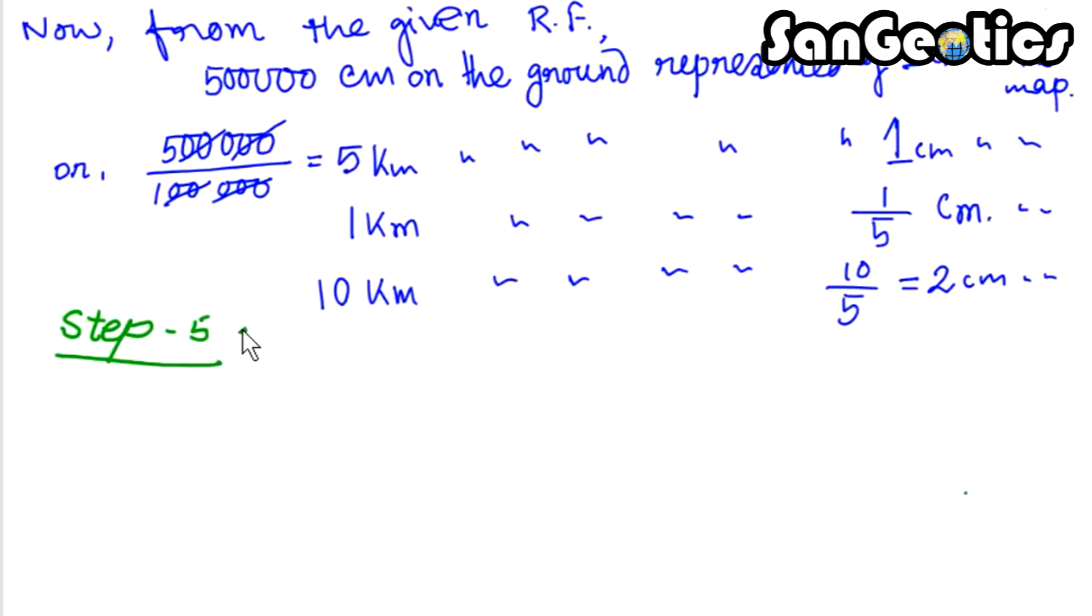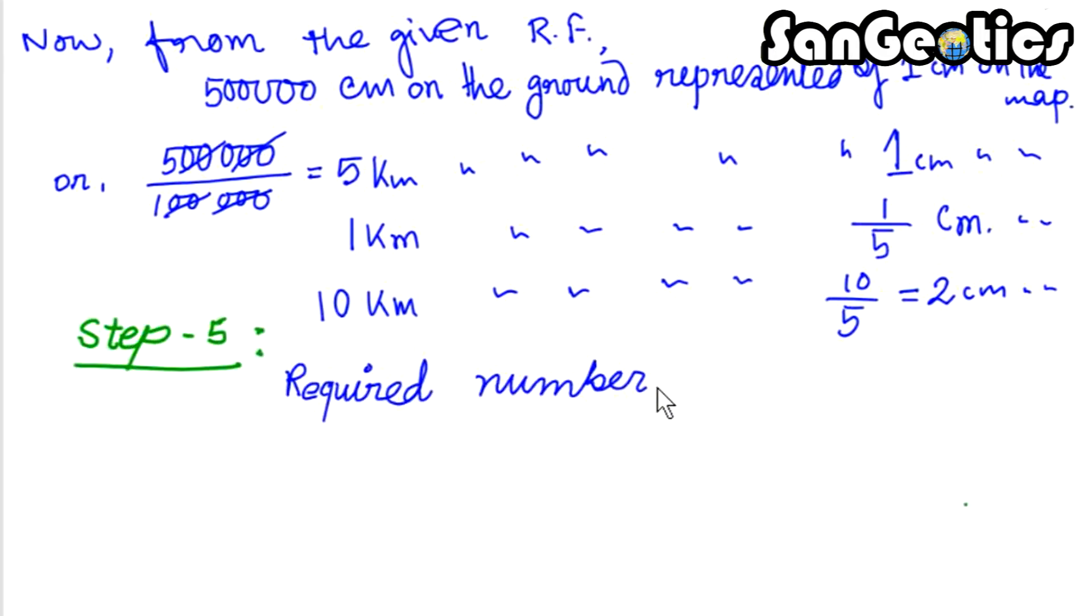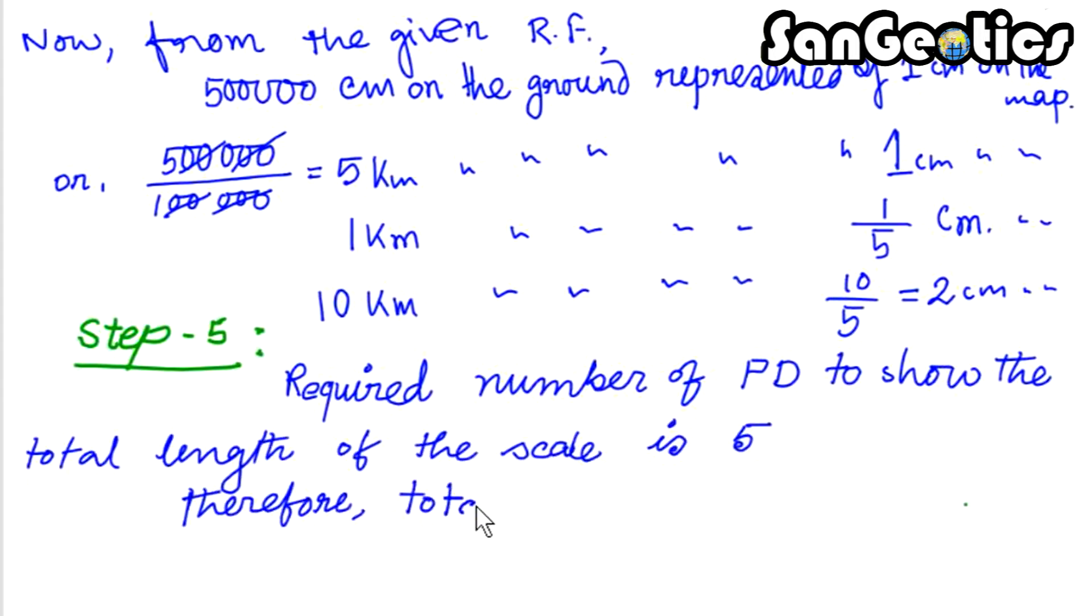Step 5. Required number of primary division to show the total length of the scale is 5. Therefore, total length of the scale will be 2 cm × 5 equals 10 cm.